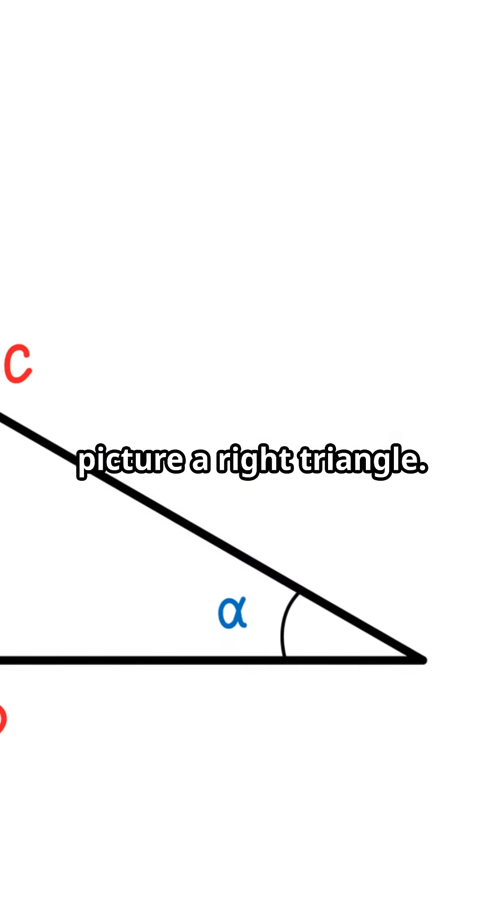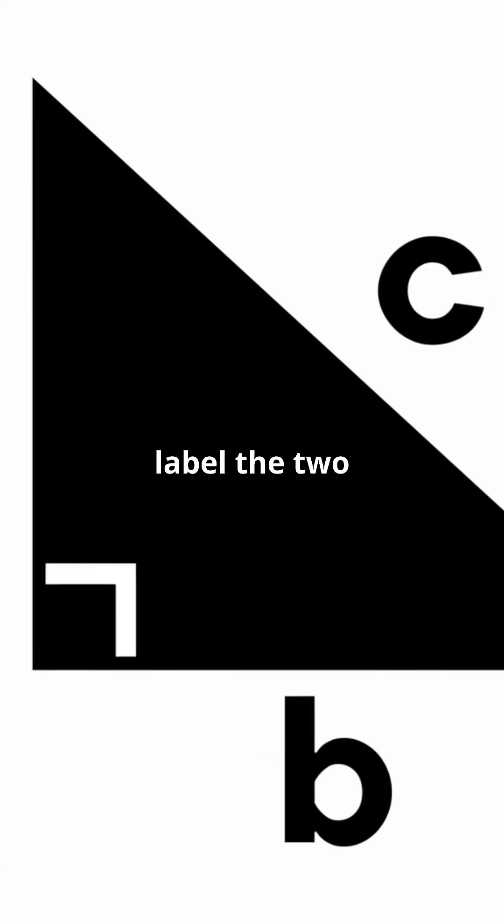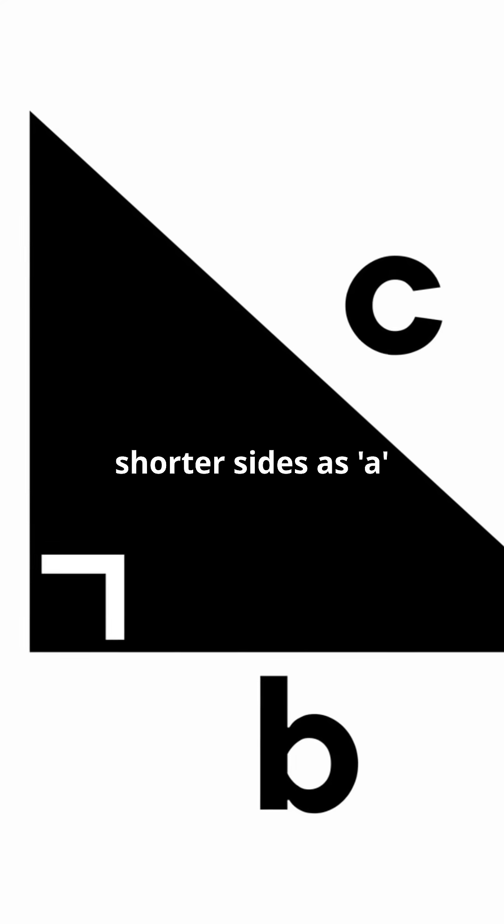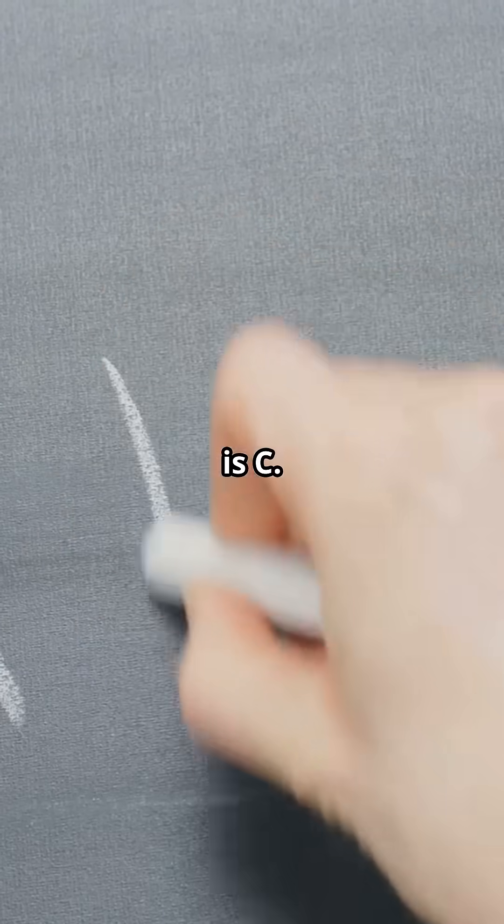All right, picture a right triangle. A triangle with one 90-degree corner, got it? Now label the two shorter sides as A and B. The longest side across from the right angle is C.